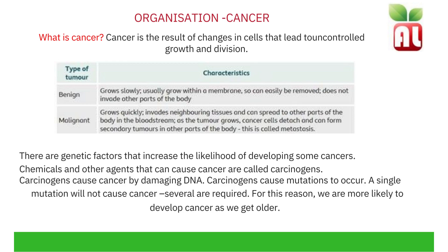Cancer is the result of changes in cells that lead to uncontrolled growth and division. There are two types of tumour: benign or malignant. Benign tumours grow slowly and usually grow within a membrane, so they can easily be removed, and do not spread to other parts of the body. Malignant tumours grow quickly, invade neighbouring tissues, and can spread to other parts of the body through the bloodstream. As the tumour grows, cancer cells detach and can form secondary tumours in other parts of the body — this is called metastasis.